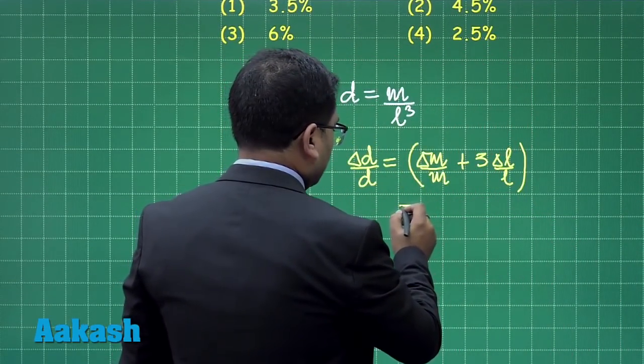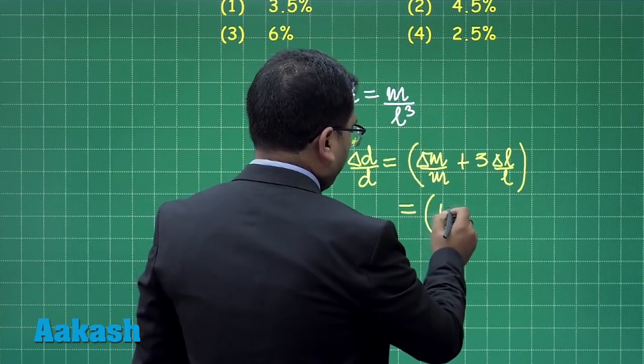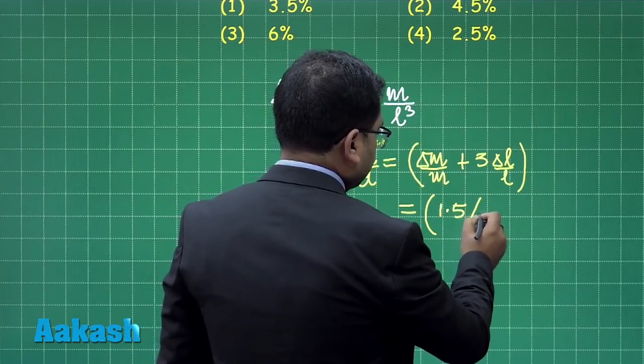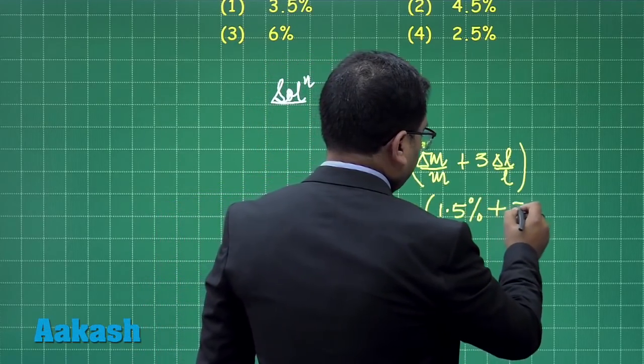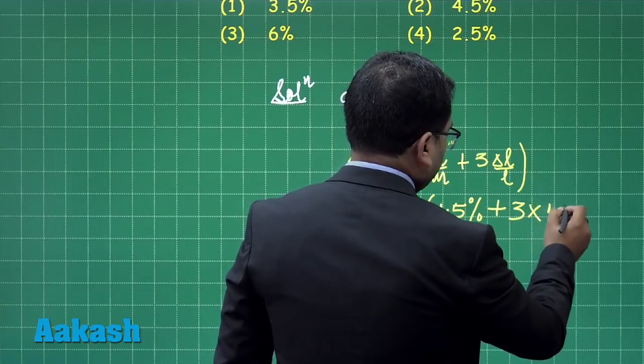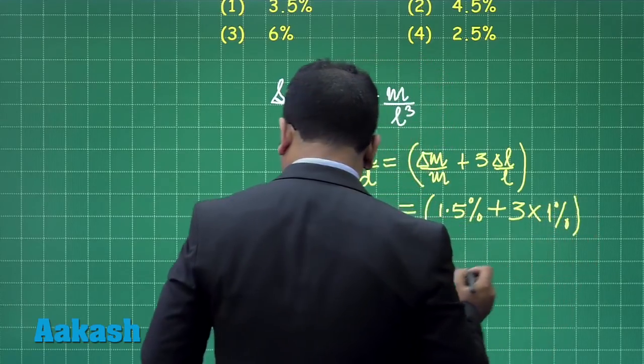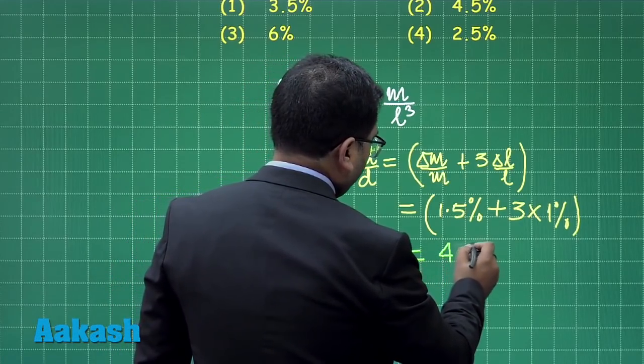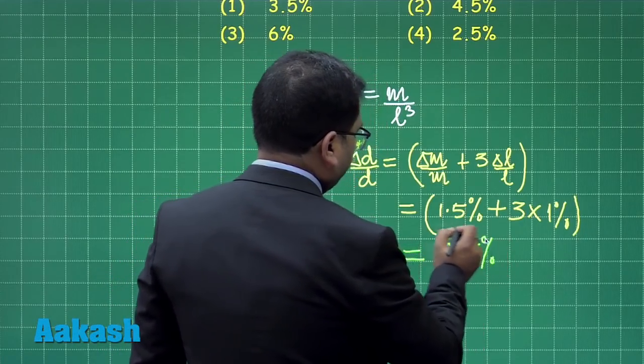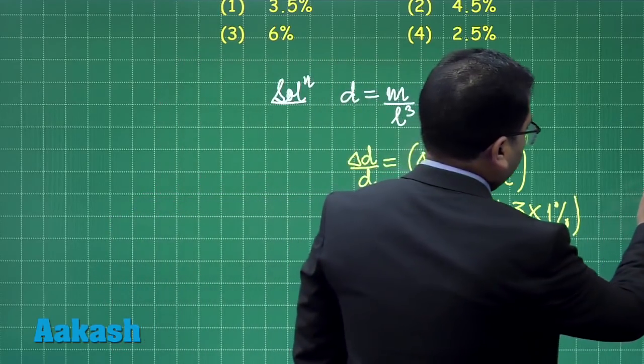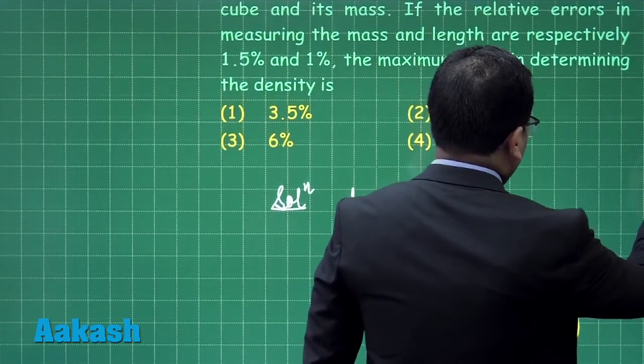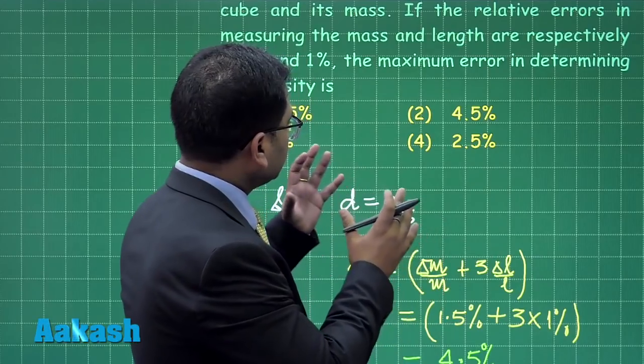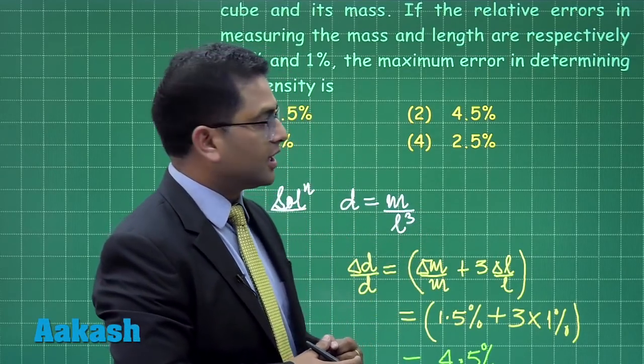So here this comes out to be 1.5% plus 3 multiplied by 1%, so that's a straightforward calculation. The value comes out to be 4.5%. Though the question is straightforward, it gives us confidence that the chapter is very important as regards JEE Mains. As far as the solution is concerned, the correct option is option number 2.